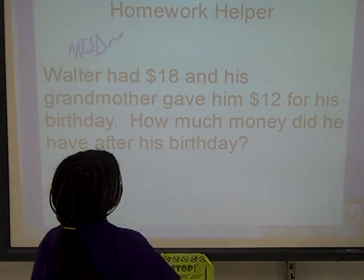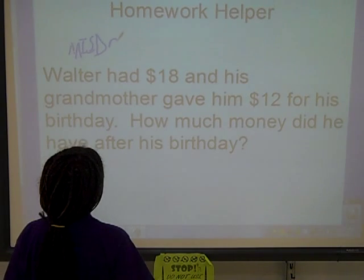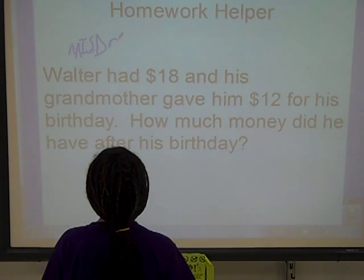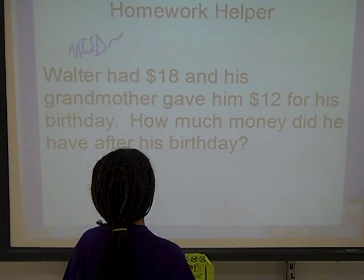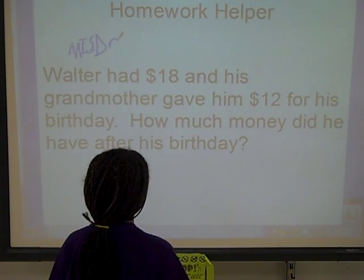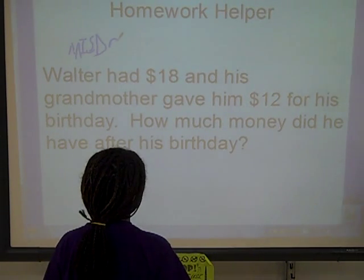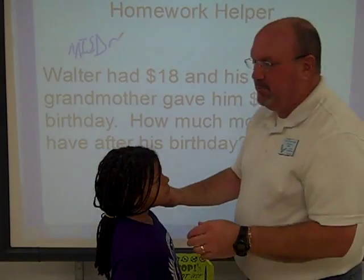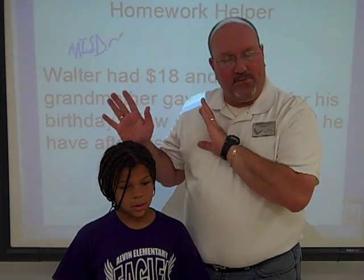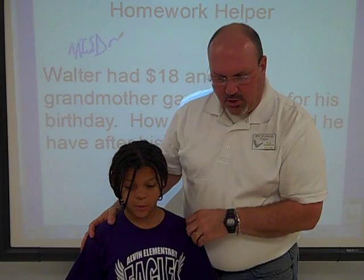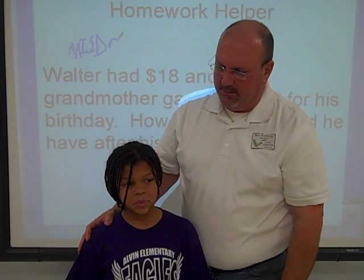Now, watch her do the MISDR strategy. Read the problem first: Walter had $18 and his grandmother gave him $12 for his birthday. How much money did he have after his birthday? Okay, here's the important part with the main idea — you have to stop, look away from the question, and tell me in your own words, without using any numbers, what's the story about?